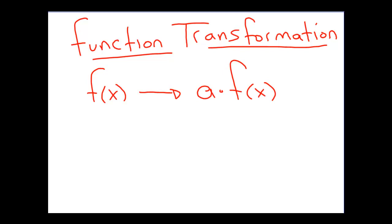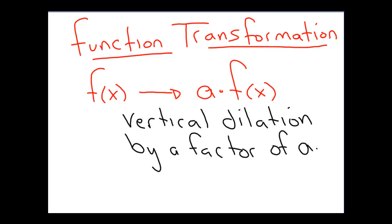If you recall, the result of this transformation was a vertical dilation, a vertical stretch by a factor of a. And what we would like to do is see how this change specifically affects trig functions, the sine and the cosine that we saw in Lesson 6-3.